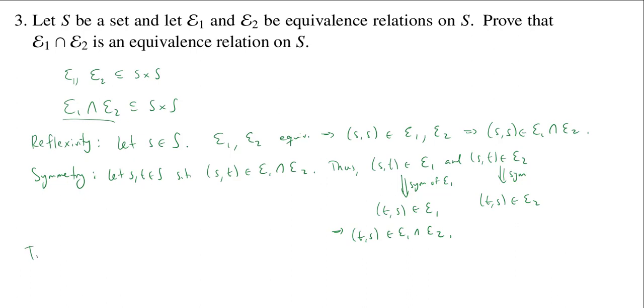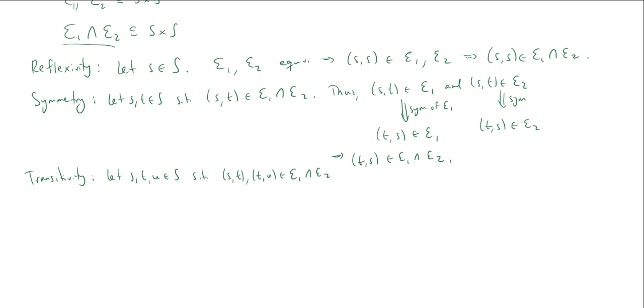Finally, transitivity. Here we're going to let s, t, and u be in S. We're going to assume that (s,t) and (t,u) are in E1 intersect E2. We need to show now that (s,u) is in E1 intersect E2. The argument is going to work the same.